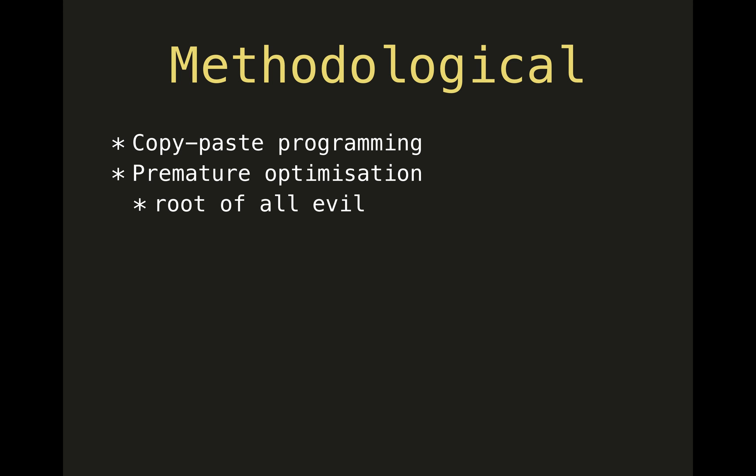Premature optimization — a famous quote of Donald Knuth says that premature optimization is the root of all evil. That's the guy who spent most of his life optimizing different algorithms, so if even he says something negative about optimization, we should listen. Dependency hell is when you have many — it can occur at many levels: many classes, many packages, or many systems in an entire product.